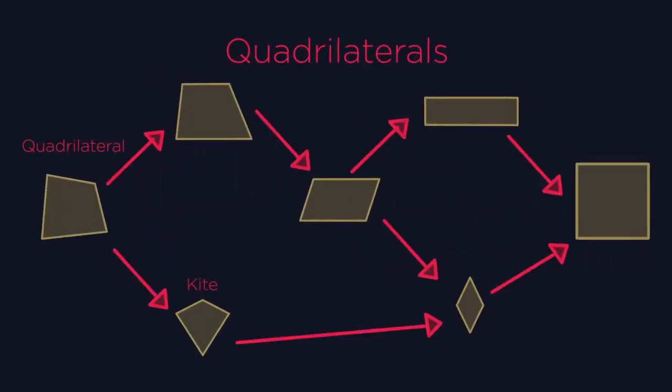So quadrilaterals are actually all very interconnected. By definition, a square is a quadrilateral, a trapezium, a parallelogram, a rectangle and a rhombus.